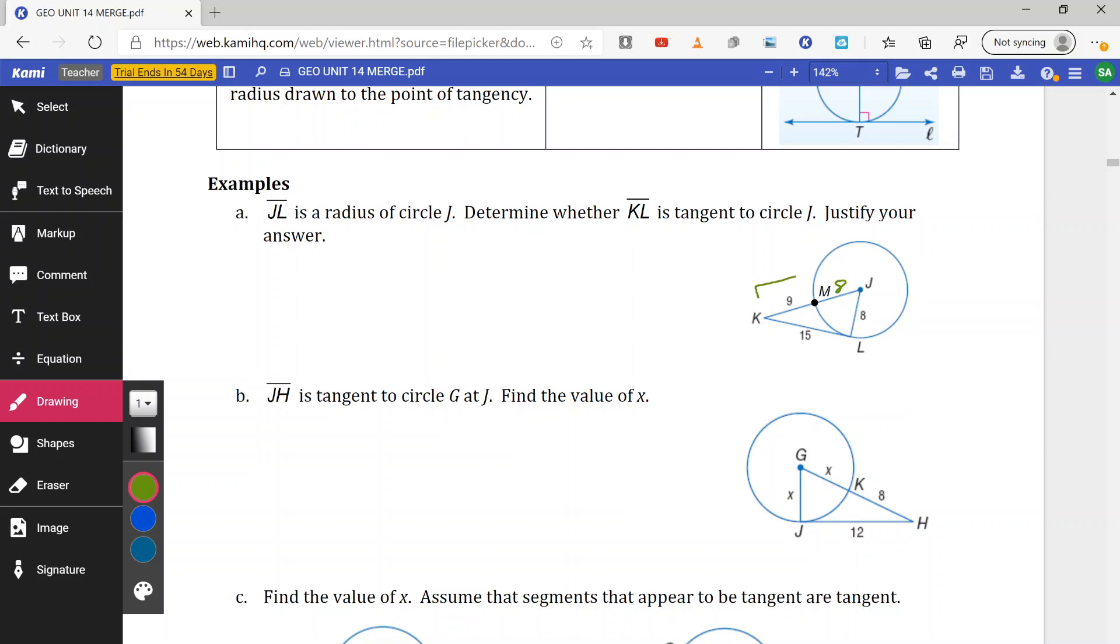Which means K to J is really 17. Now if this is truly tangent, it's going to create a right angle. So if I have a right angle, I can use the Pythagorean theorem here to see if I end up with two equal measures. So A squared plus B squared gives me C squared. So A squared and B squared being the two short sides, 8 and 15. So we have 8 squared plus 15 squared is supposed to be equal to our longest side, 17 squared.